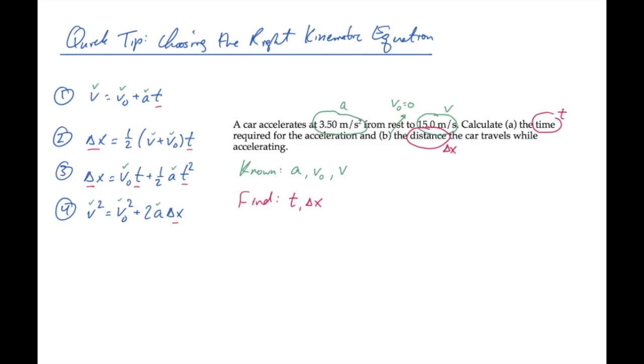As we look at the list, notice that the first equation, equation one, has only one unknown in it, and it's the time t. So we can solve for that. Substitute the values and calculate, finding that in this case, the time for the acceleration is 4.29 seconds.